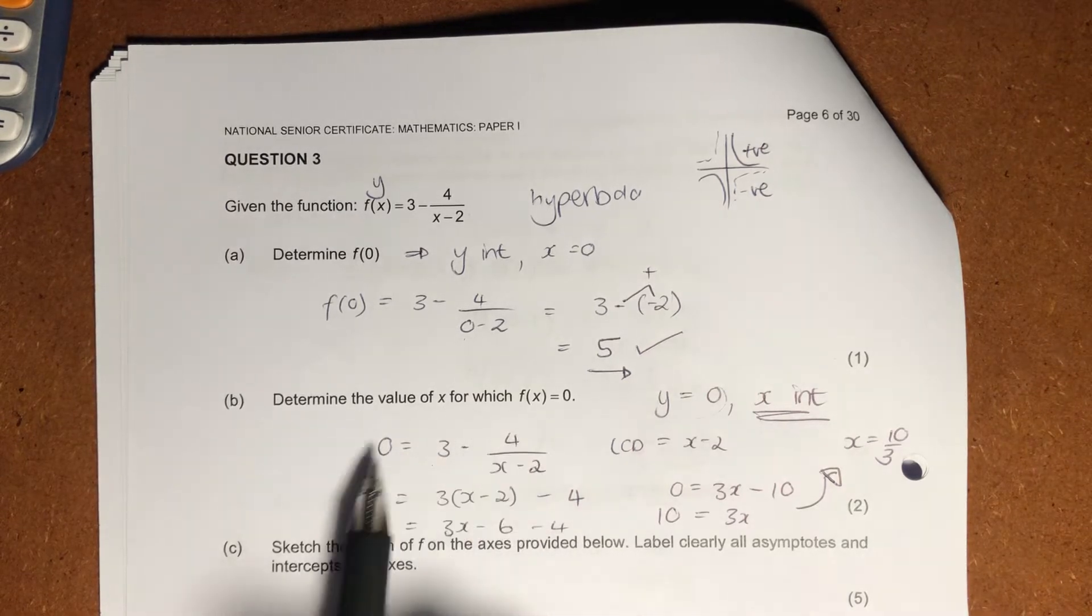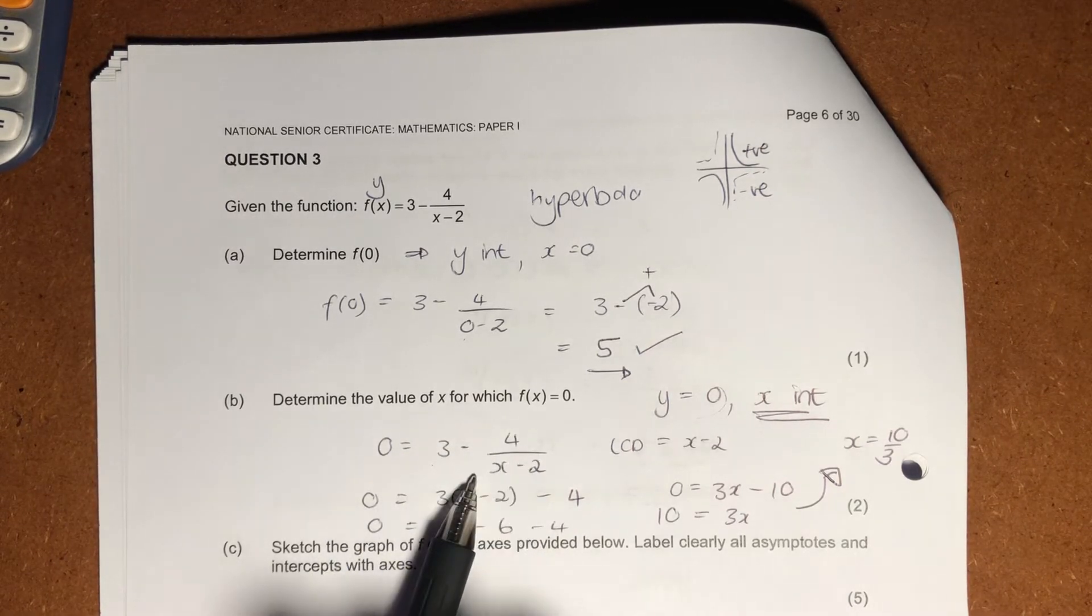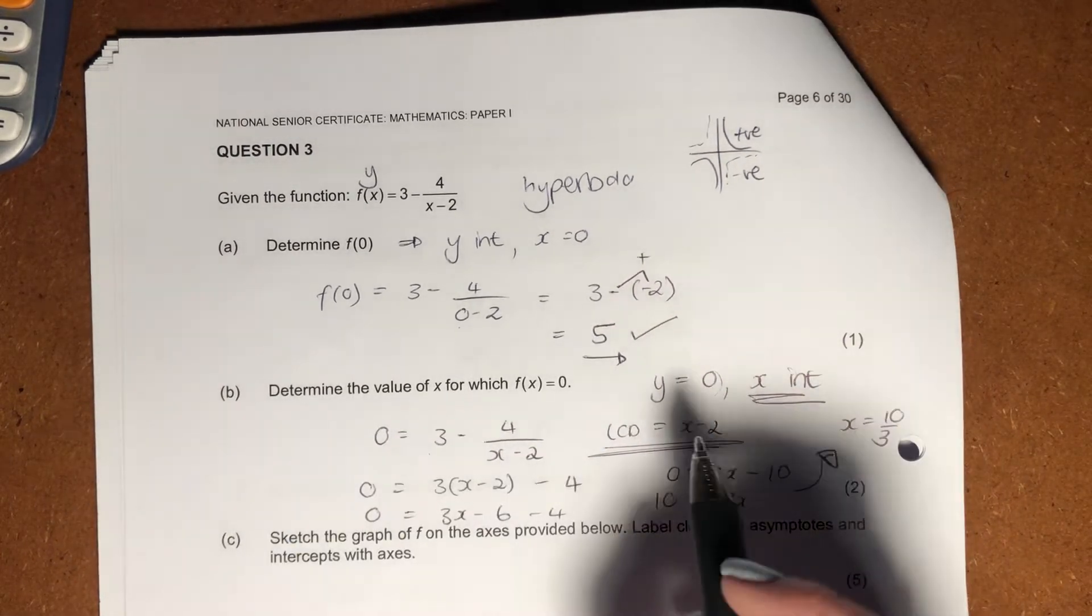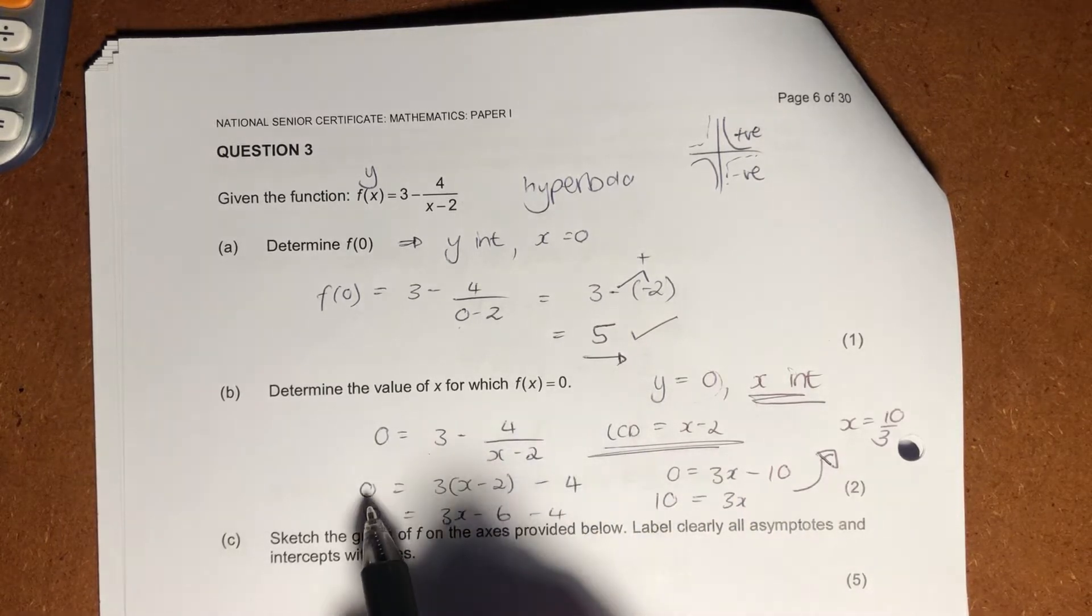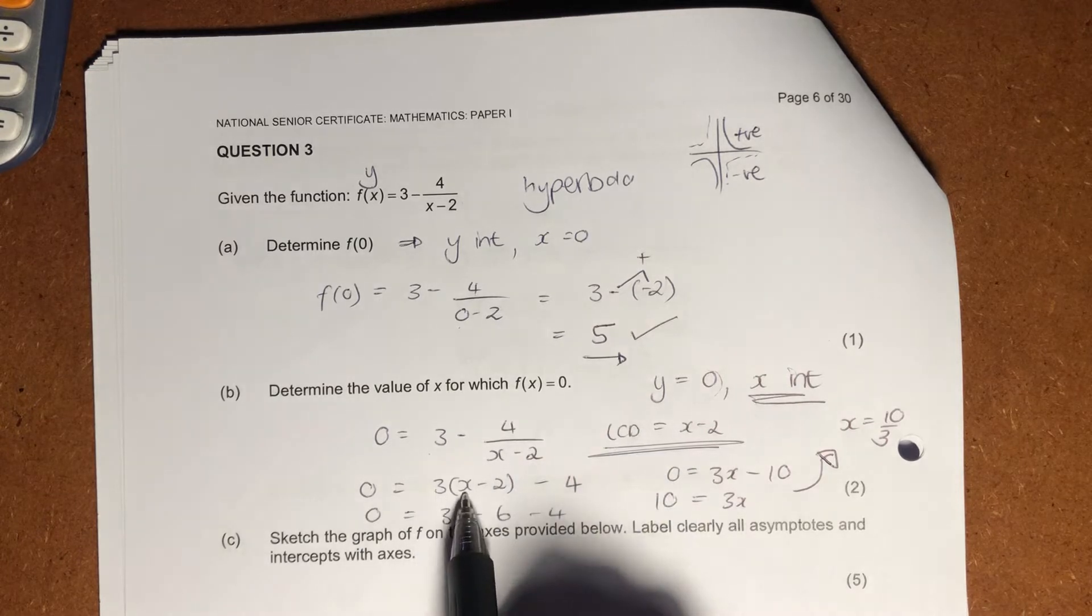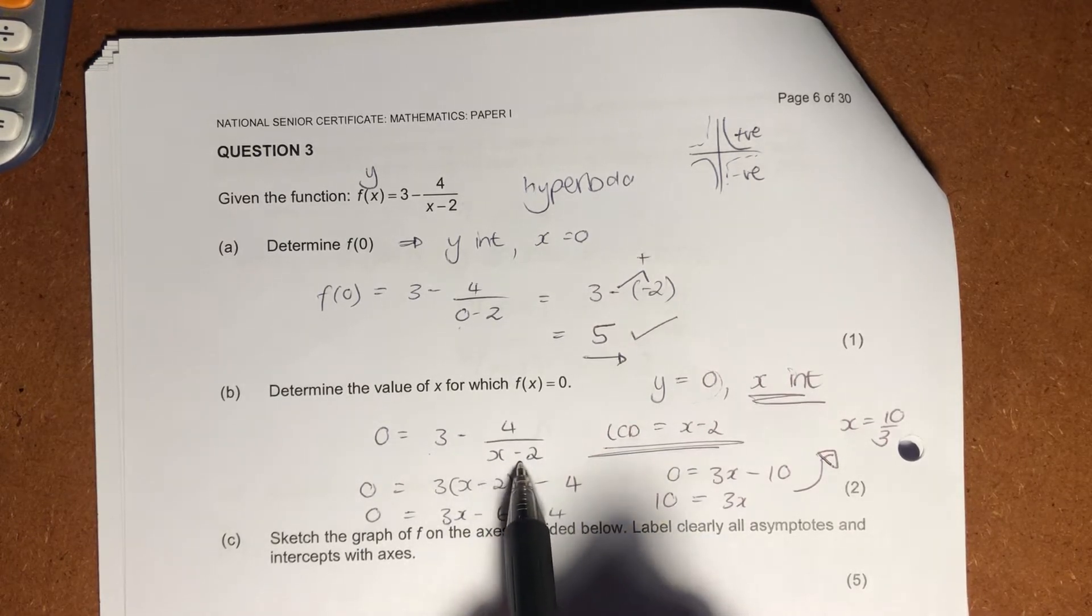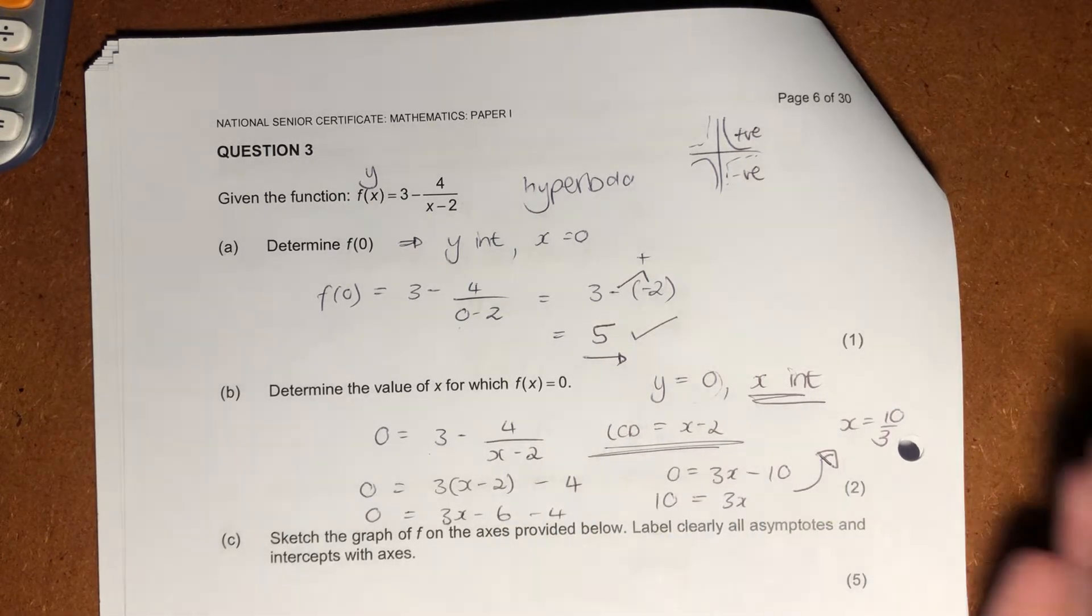Over here, we're going to make f of x equal to 0. Then we're just going to solve this side of the equation. You're going to need to do that using your LCD. Our LCD is x minus 2. Times that through in your equation, so it becomes 0 times by anything is still 0. 3 times by x minus 2, minus 4. The x minus 2 falls away as the denominator of 4 because it cancels with that x minus 2 that we're multiplying through.